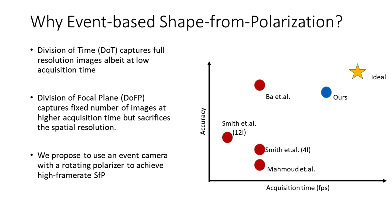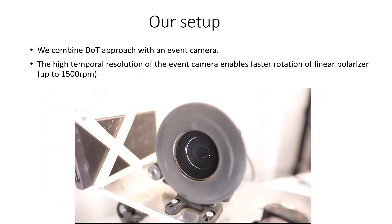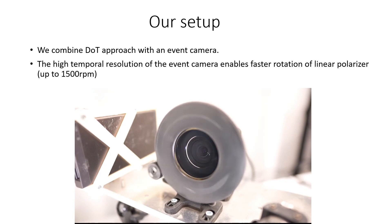We propose to use an event camera with a rotating polarizer to achieve high frame rate shape from polarization. We combine the division of time approach with an event camera. The high temporal resolution of the event camera enables faster rotation of the linear polarizer, up to 1500 RPM.